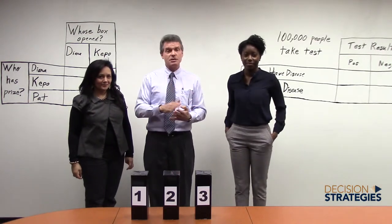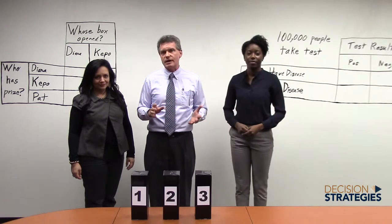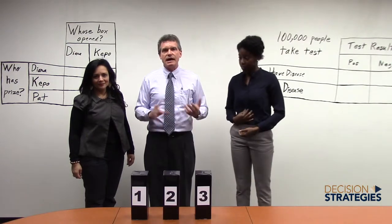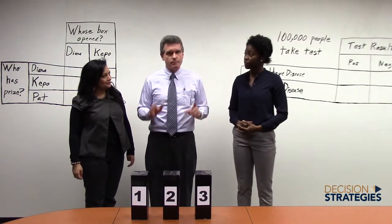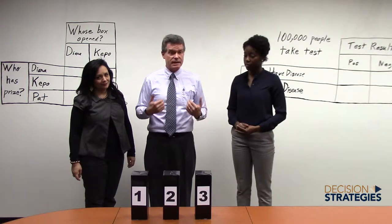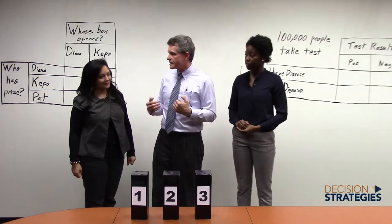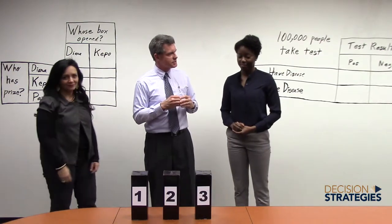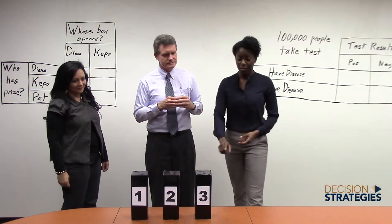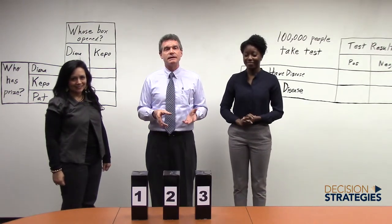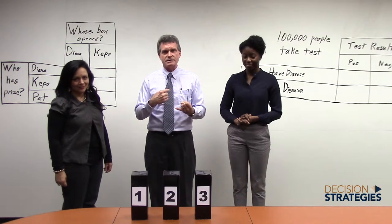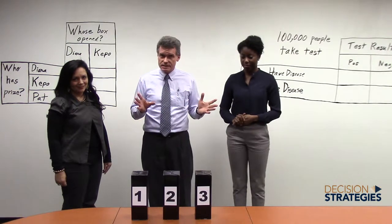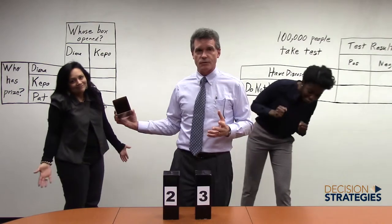Obviously we have to change the rules a bit now, because after they've chosen their boxes, I'm only going to have one box left. So rather than lifting my one remaining box, I will lift one of their two boxes. But the rule still holds, I will never reveal where the prize is, and I know where the prize is. So Diana, go ahead and pick a box please. I will take box number one. And Keppo, which box do you want? Three. Okay, so that leaves me with box number two. Now I'm not allowed to lift box number two. I have to lift one of theirs, and I'm not allowed to show where the prize is.